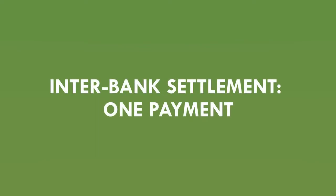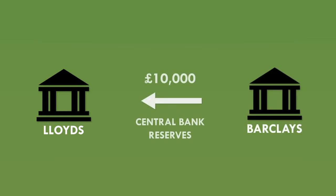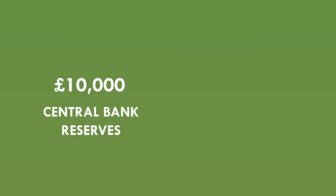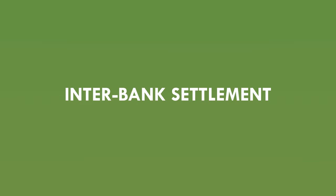But there's a small complication. What happens if Robert goes and spends the new bank-created money with a shop that has a bank account with a different bank, say Lloyd's? If this happens, then Lloyd's will want to see £10,000 of real money from Barclays. Barclays would then need to transfer £10,000 of central bank reserves to Lloyd's to settle the transaction. This process of banks making payments between themselves is called interbank settlement, and it's crucial to the way that banks have been able to gain control over the entire money supply.